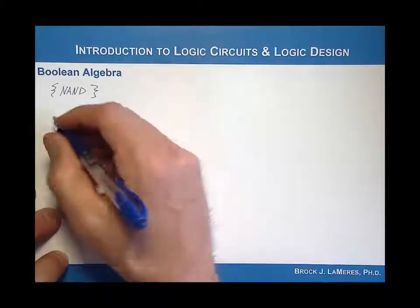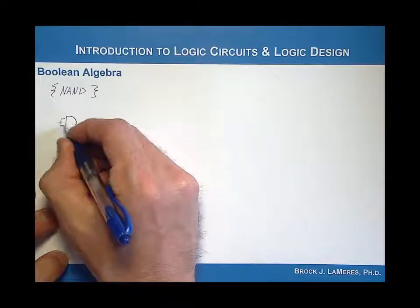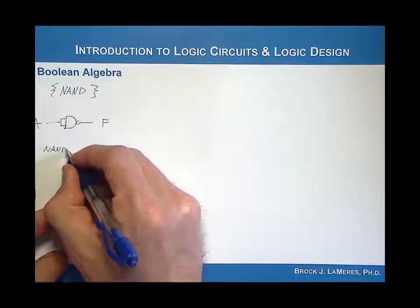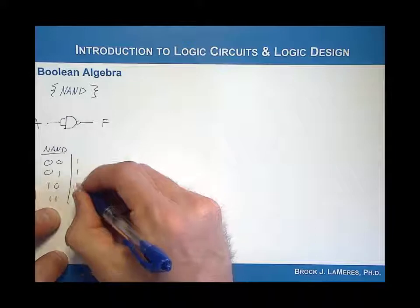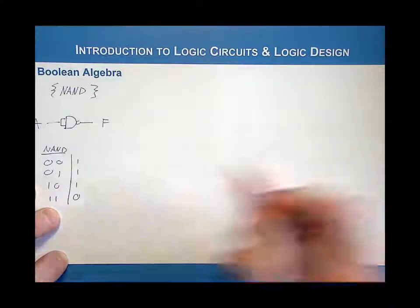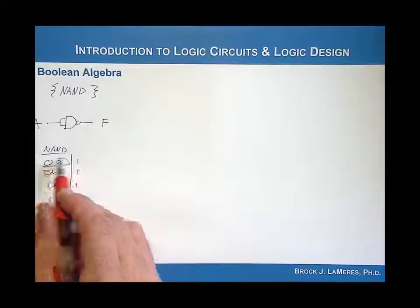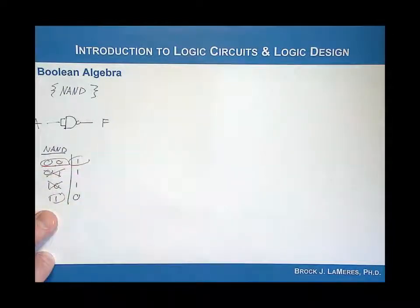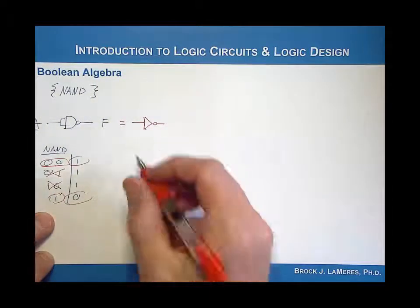Let's take a look at how we could create an inverter using a NAND gate. Consider this configuration: I'm going to take a NAND gate and tie its inputs together. We'll call this A and we'll call the output F. The truth table for a NAND gate is: 0,0→1; 0,1→1; 1,0→1; 1,1→0. By tying the inputs together, we only ever have 0,0 or 1,1 as inputs. If A is 0, the output is 1. If A is 1, the output is 0. So this is actually equivalent to an inverter.